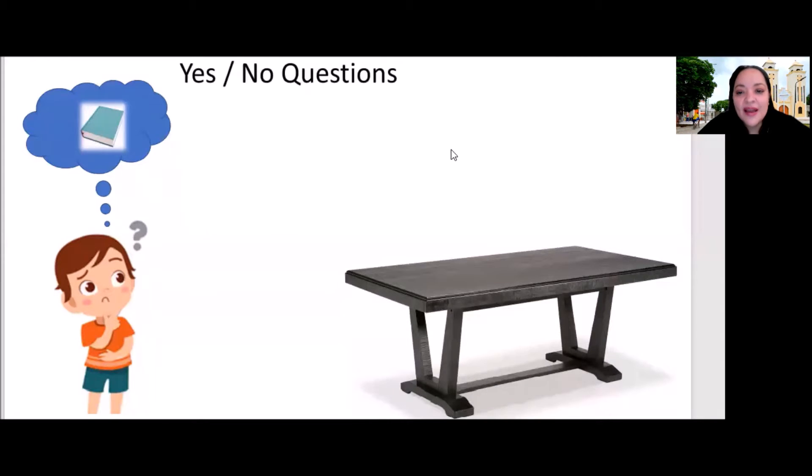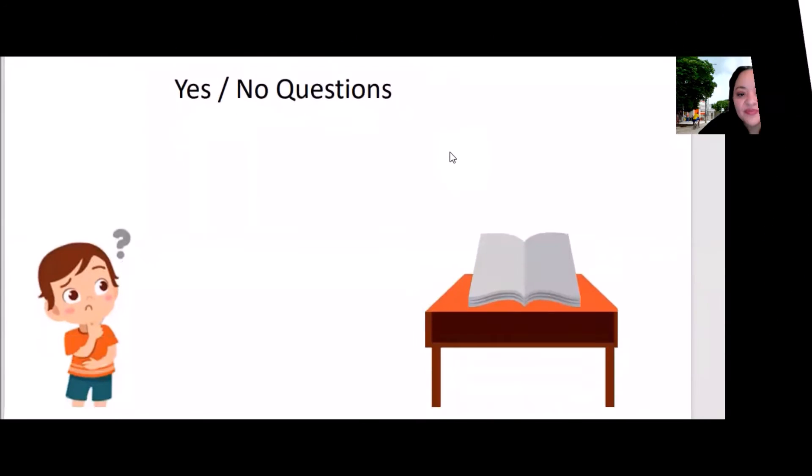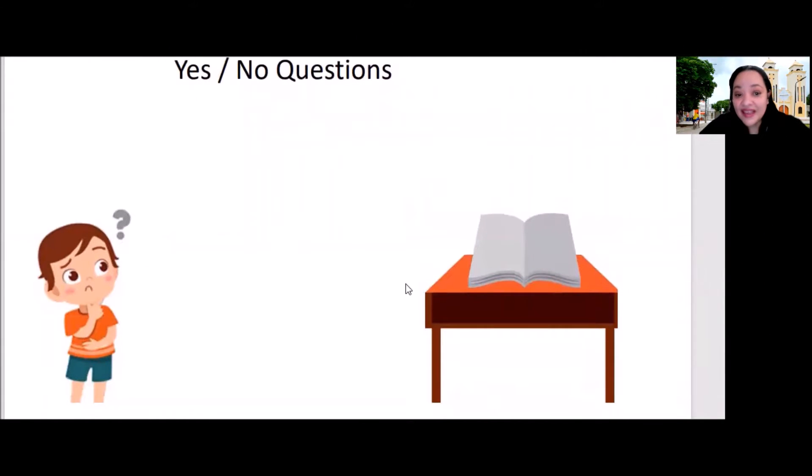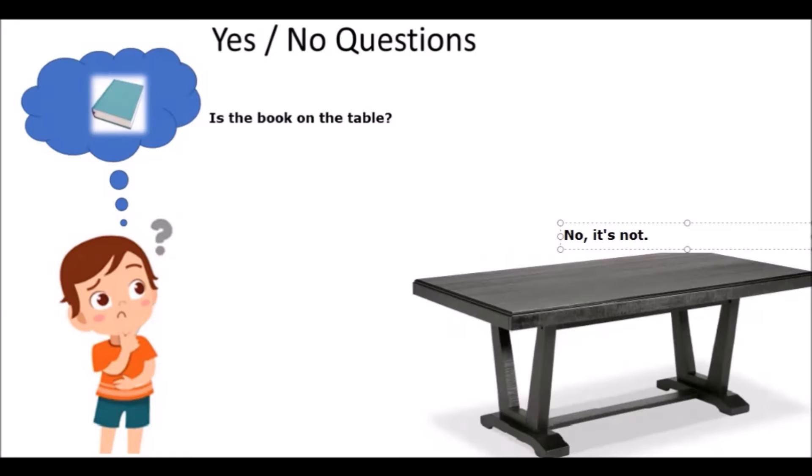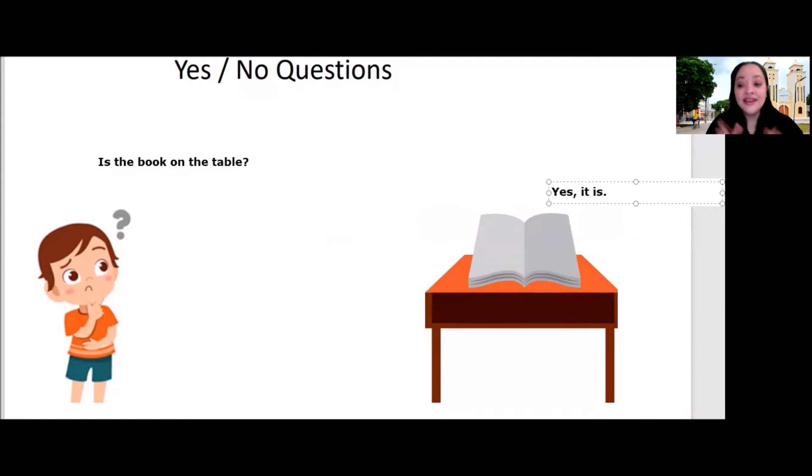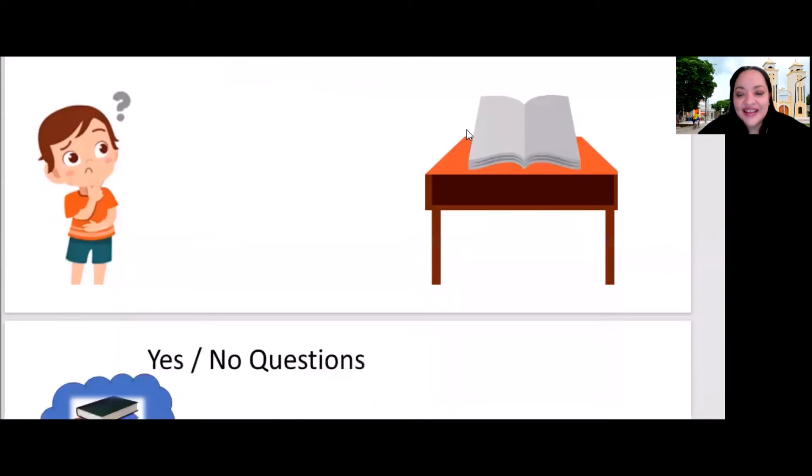What about in this picture? Same situation. He's thinking, is the book on the table? And guess what? Yes! Yes, it is. So is the book on the table? No, it's not. Is the book on the table? Yes, it is. Let's see the next example.